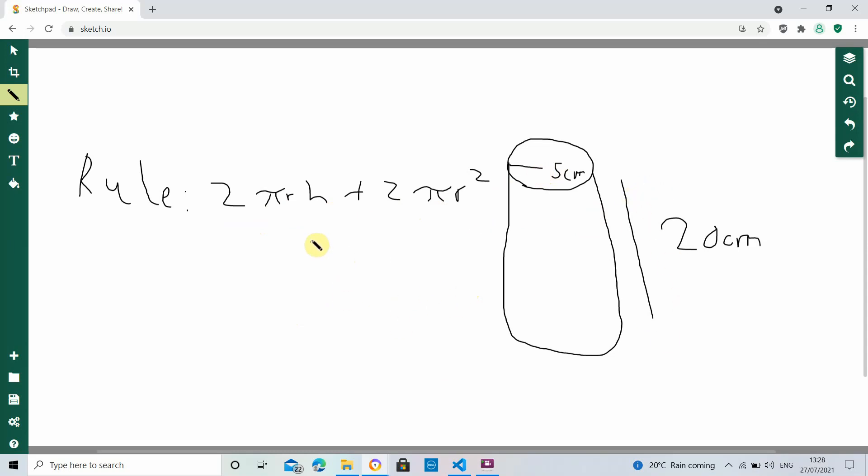So first off, 5, which is the radius, times 20, which is the height, that's 100. And 100 times pi is 100 pi, times 2 that will be 200 pi.